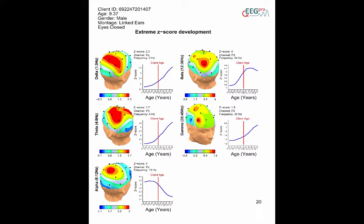On the left plot, the z-scored absolute power of the most extreme z-score within a frequency band is plotted on a three-dimensional head.